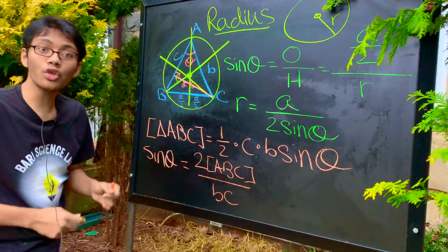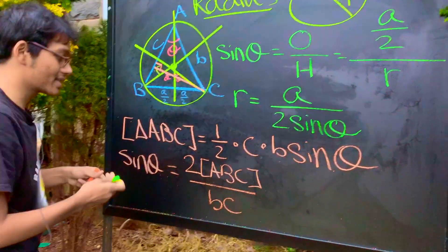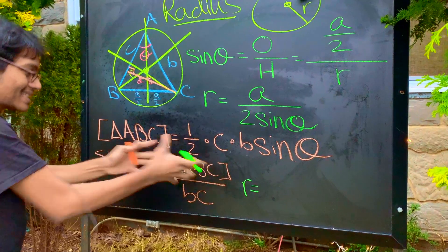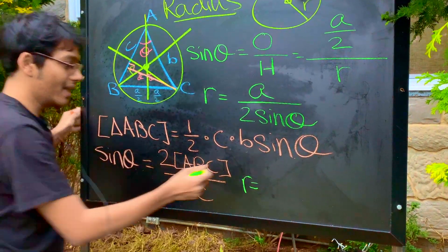And now, finally, we can conclude what the radius of the circumcircle is going to be. The radius of our circumcircle, if we take this sine theta, plug it back in, what are we going to get?